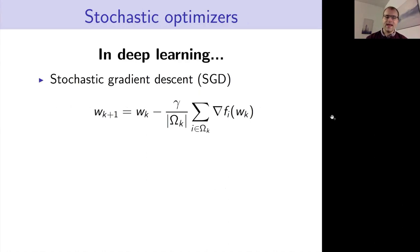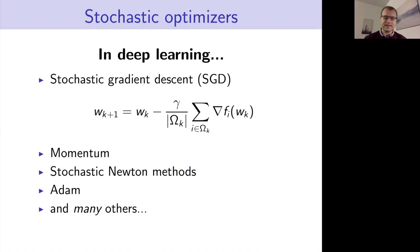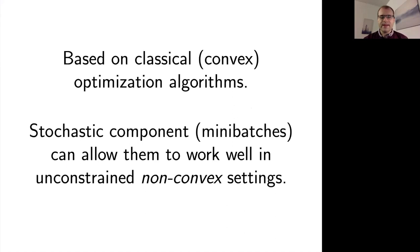The usual suspects that you tend to see in deep learning are, of course, classic stochastic gradient descent, which has iterations of the following form for some step size gamma and random mini-batches omega_K at each iteration. There are also developments and extensions: the momentum optimizer, second-order stochastic Newton methods, the Adam optimizer, and many others. All of these have their particular strengths and weaknesses, and they're all based around classic convex optimization ideas and algorithms.